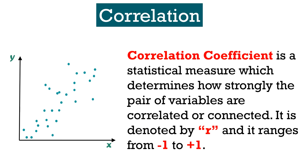Correlation coefficient refers to a statistical measure which determines how strongly the pair of variables are correlated or connected to one another. It is denoted by R and it ranges from minus 1 to plus 1. Correlation can be positive correlation, negative correlation, and no correlation.